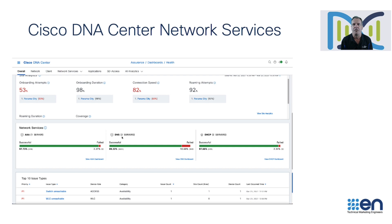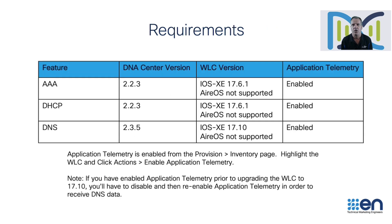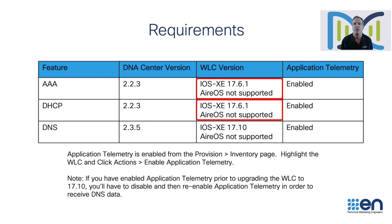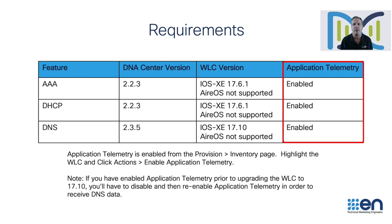Now, there are a few requirements to get this information into Cisco DNA Center. AAA and DHCP need to be on Cisco DNA Center version 2.2.3, while DNS needs Cisco DNA Center to be on version 2.3.5. AAA and DHCP both need the wireless LAN controller to be on version 17.6.1, while DNS requires the wireless LAN controller to be on 17.10. They also need to be on IOS XE because AireOS is not supported. They also require application telemetry or NetFlow to be enabled.